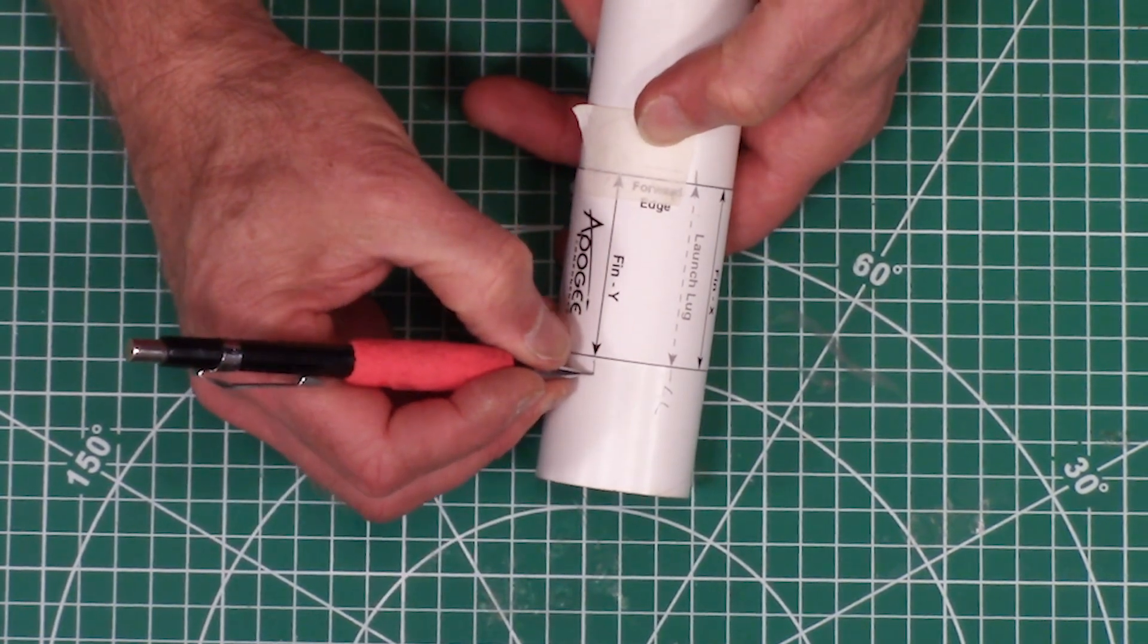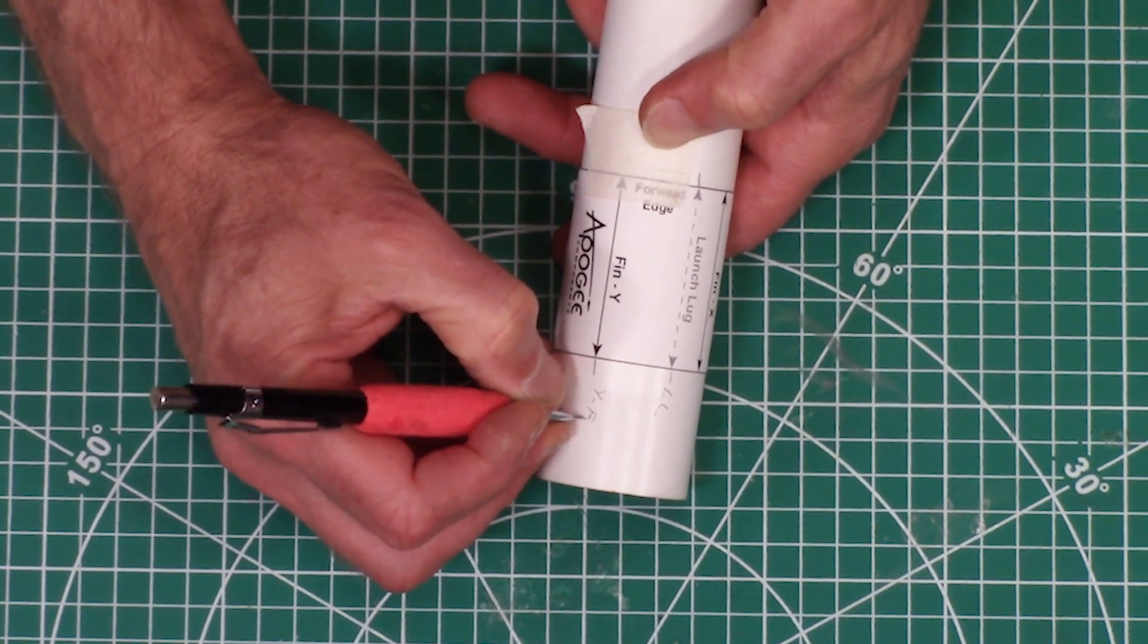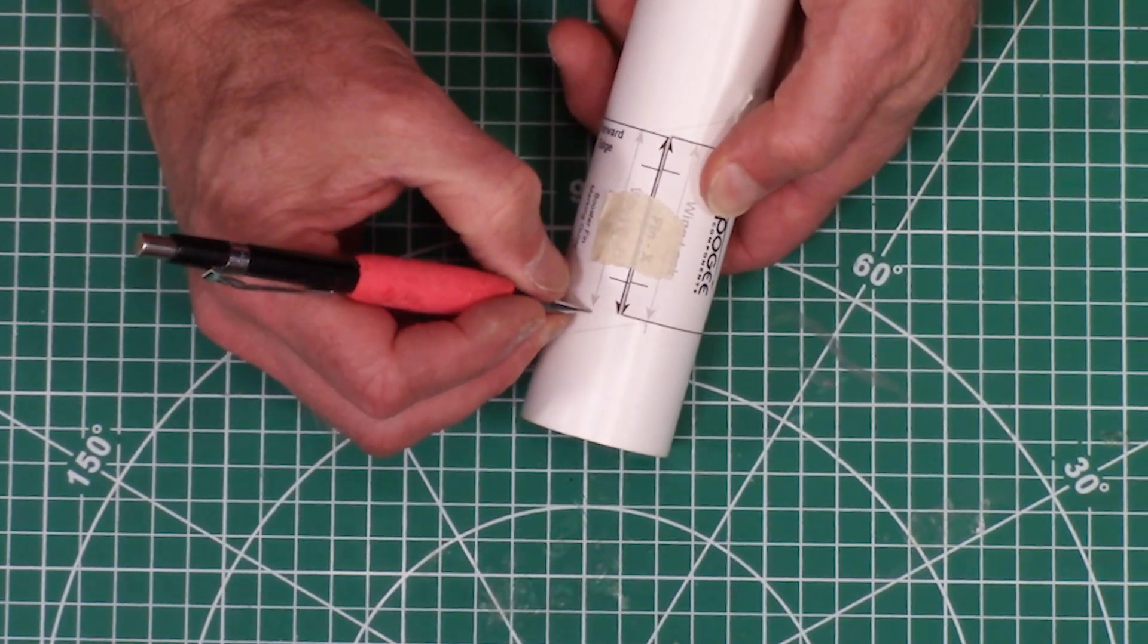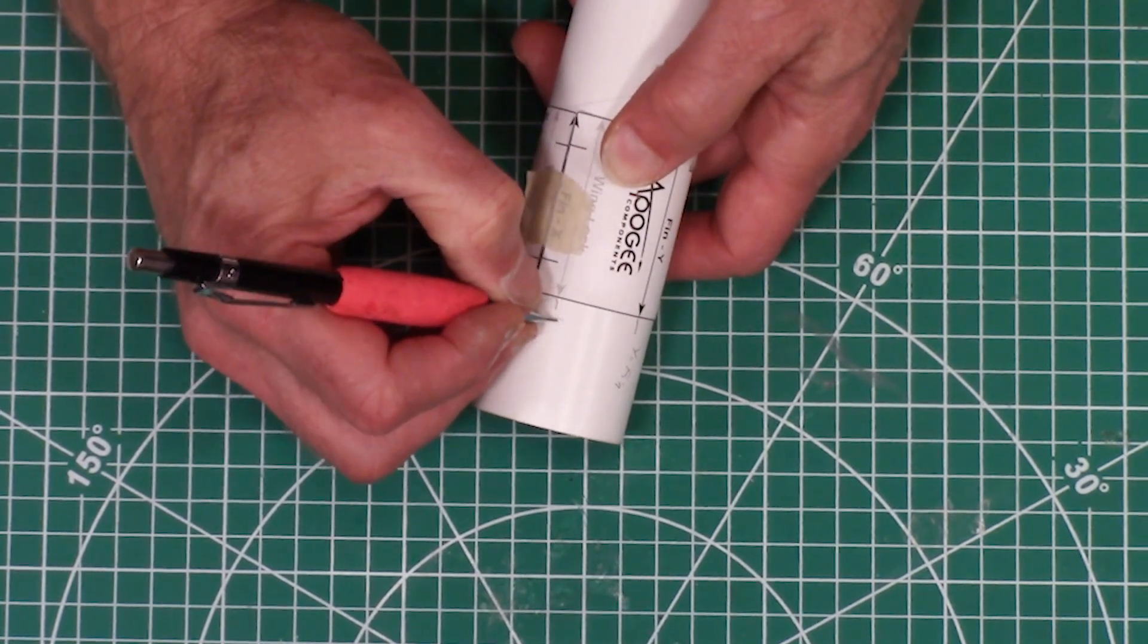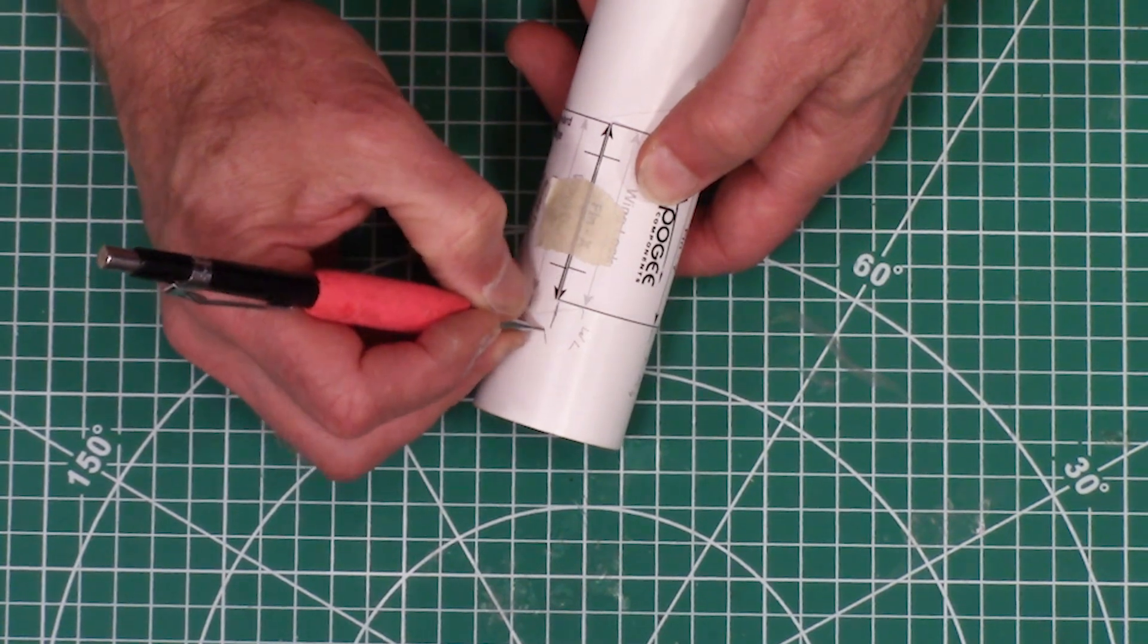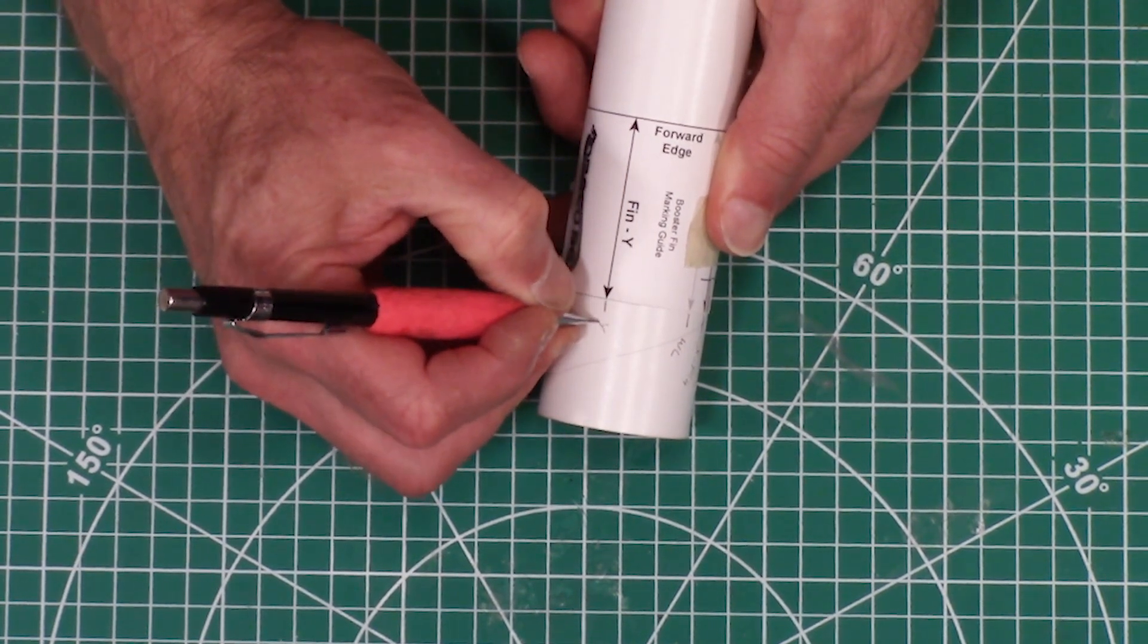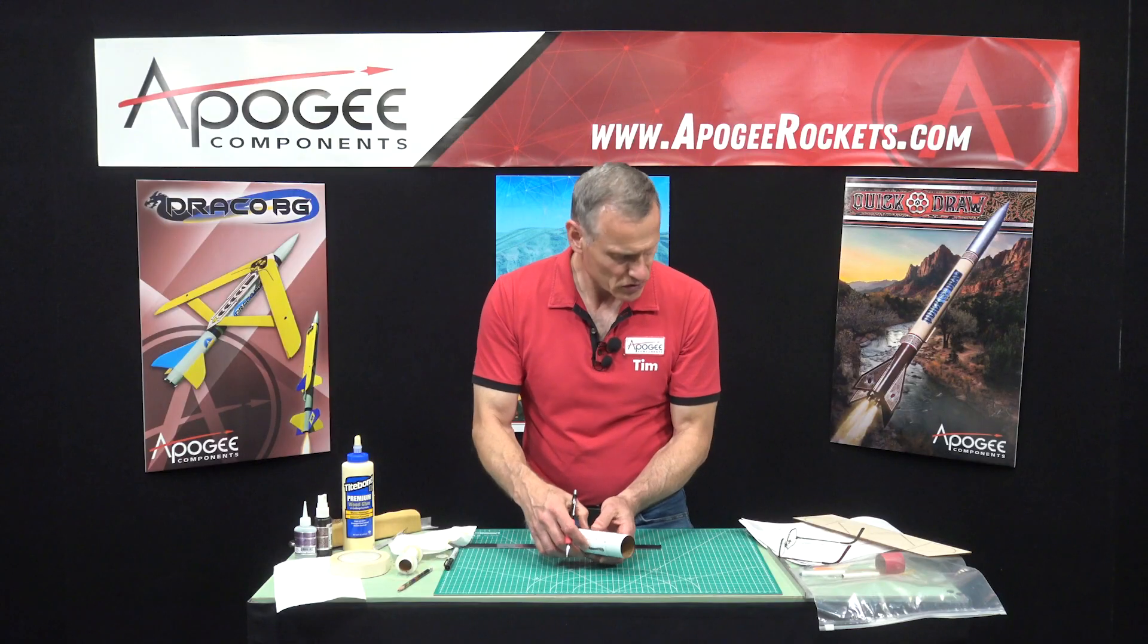So I'm just putting LL for launch lug. This is a Y fin, so I put Y fin. That's a wing lock and a wing lock, so I'll put WL for wing lock. Here is an X fin, and then finally the final Y fin.